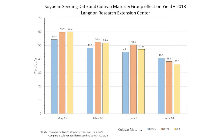Looking at the 2018 data: on May 15th, the 00.9 and 0.1 maturity groups had the highest yields, about 6 bushels better than the 00.5. At the May 24th date, we saw similar results with about a 4 bushel yield advantage for the later maturing varieties. However, as we got into June, the 00.9 had the highest yields, and the earliest and latest varieties were not significantly different from one another. At the June 14th date, the earliest variety had the highest yield. From May 15th to June 14th, the 00.5 only dropped about 25 percent, while the 00.9 and 0.1 dropped 39 percent. So the later maturing varieties have the highest yields early on, but as we get into June the yields drop off quite significantly.